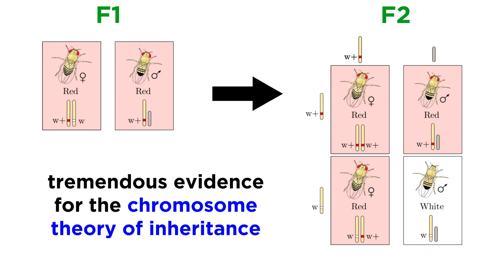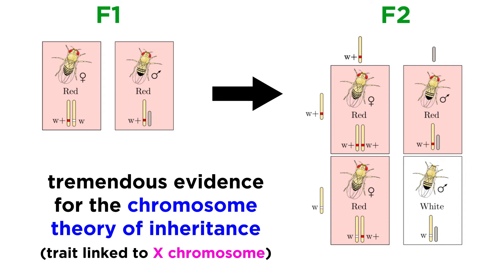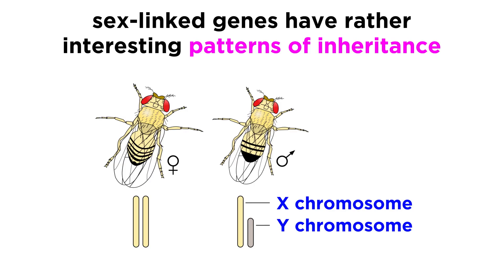This constituted tremendous evidence for the chromosome theory of inheritance, because it demonstrated that information regarding the inheritance of a particular phenotype was associated with a particular chromosome — in this case, the X chromosome. Beyond corroborating the chromosome theory of inheritance, it was therefore realized that sex-linked genes have interesting patterns of inheritance.